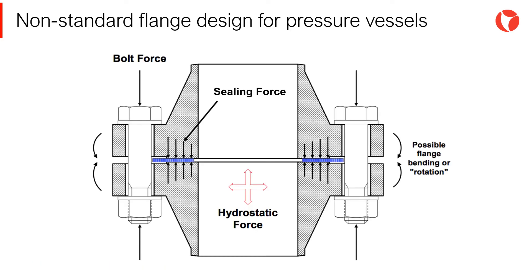The gasket seating load is defined under the conditions existing when the gasket is seated by applying an initial load, with the joint at atmospheric temperature and pressure. The minimum initial load considered adequate for proper seating is a function of the gasket material and the effective contact area to be seated. In the operating condition, the flange must resist the hydrostatic end force tending to part the joint and maintain sufficient compression on the gasket to assure a tight joint at the design temperature. The minimum load is a function of the design pressure, the gasket material and the effective contact area to be kept tight under pressure.